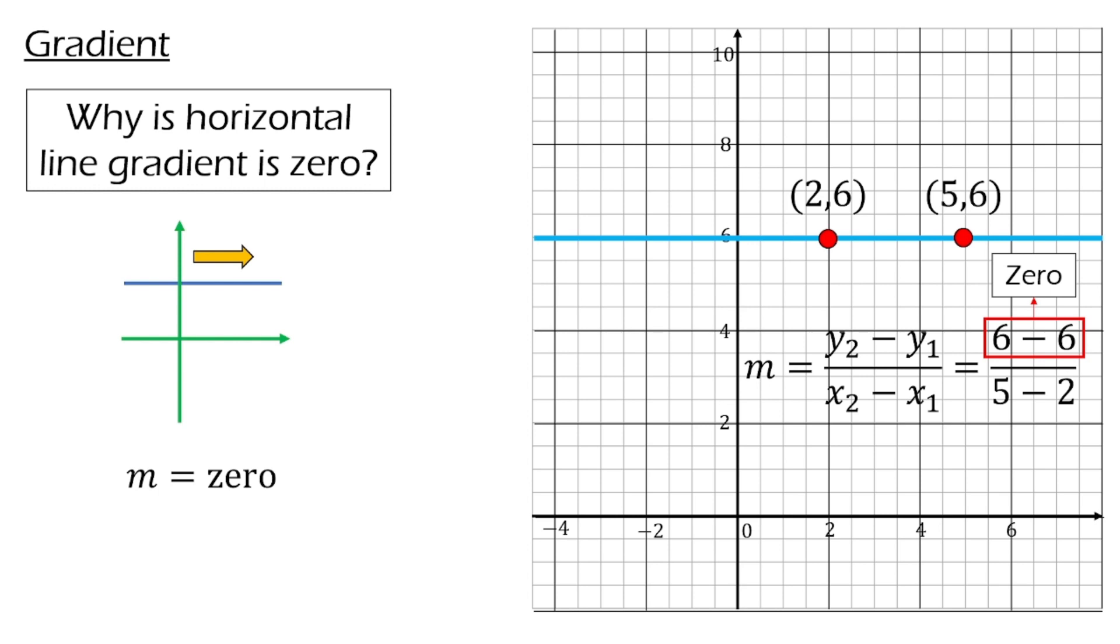This is true regardless which coordinate you choose on the same line, as it is always at the same level. Therefore, the gradient of a horizontal line is 0.